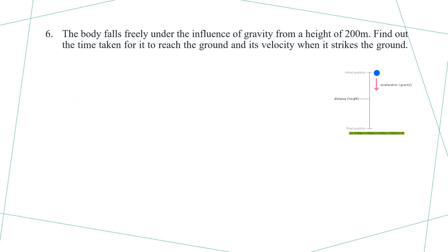Example number 6: a body falls freely under the influence of gravity from a height of 200 meters. Find the time taken for it to reach the ground and its velocity when it strikes the ground.